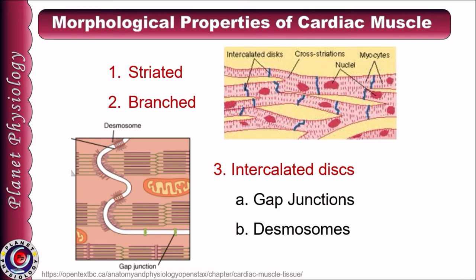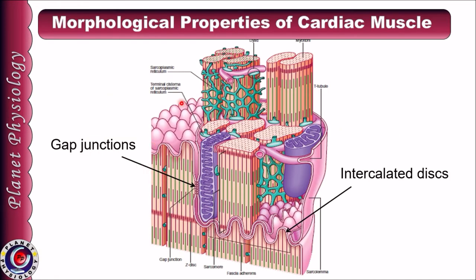Let us start with morphological properties. Cardiac muscles are striated muscles like that of skeletal muscles, but they are branched. They possess intercalated discs, which are part of the sarcolemma and contain gap junctions and desmosomes. As shown in this picture, in pink color is the intercalated disc and here are the gap junctions. Gap junctions allow transmission of action potential from one cell to the next cell so that cardiac muscle can act as syncytium, a single unit.